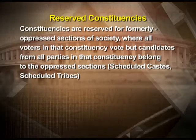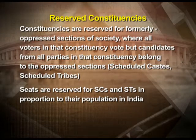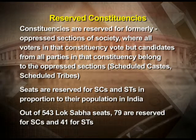Everyone in the constituency shall vote, but the candidates will either belong to Scheduled Castes or Scheduled Tribes. Seats are reserved for SCs and STs in proportion to their population in India. Presently, 79 seats are reserved for SCs and 41 for STs in the Lok Sabha out of the 543 Lok Sabha seats. In every state, the percentage of Scheduled Tribes and Scheduled Castes in the population may not be the same. For example, in Punjab, there is no Scheduled Tribes population, so no constituency is reserved for Scheduled Tribes — a peculiar phenomenon unique to Punjab.